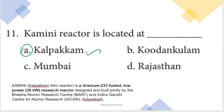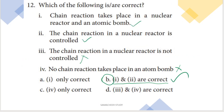Next: Kamini reactor is located at Kalpakkam. KAMINI is an abbreviation for Kalpakkam Mini Reactor. Next: which of the following statements is correct? Chain reaction takes place in a nuclear reactor and also in an atomic bomb — that is true. Checking all statements, option B — statements 1 and 2 are correct — is the right answer.